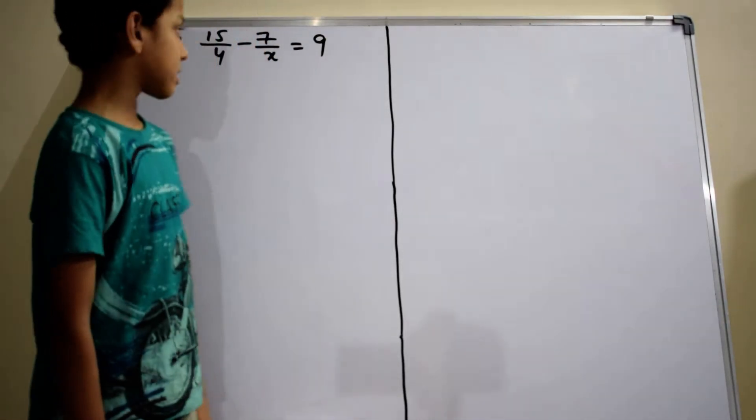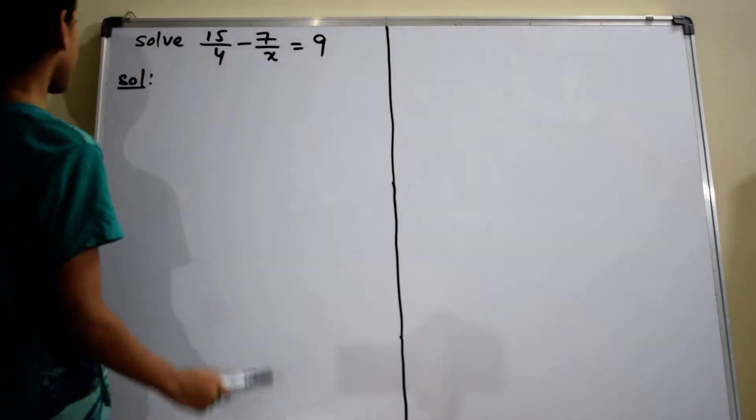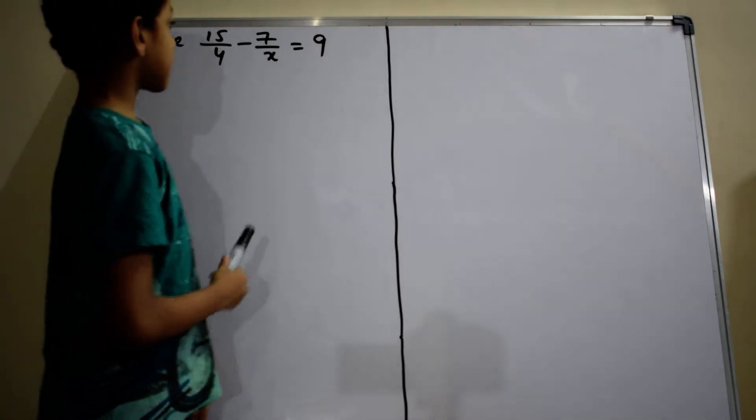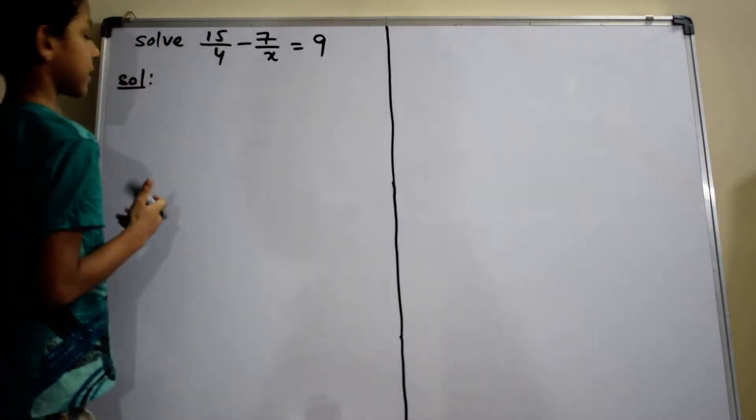In fact, let's discuss the solution of the given problem. The problem is solve 15 by 4 minus 7 by x equals 9. Let's start the solution.